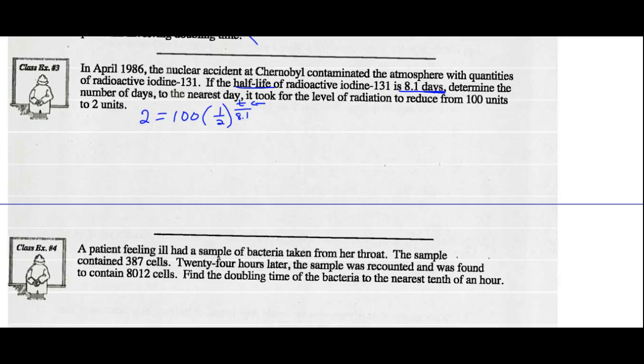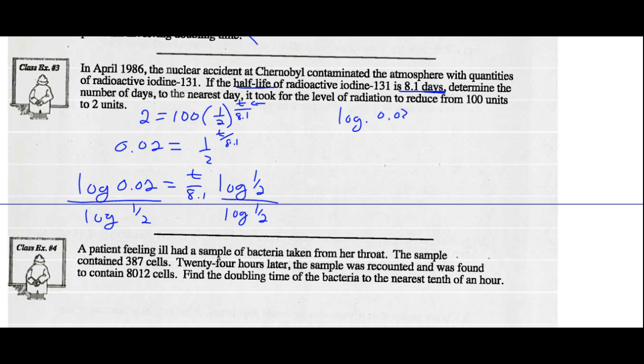If the time is 8.1 days, 8.1 divided by 8.1 gives me an exponent of 1, so one-half to the first. In 8.1 days, we would have 50 units left, half the amount. If we do it for 16.2 days, we'd have one-half squared, or a quarter of the amount, so 25 units. Now we have to figure out what t is. We can use our common log method. Step 1, divide both sides by 100. 2 divided by 100 is 0.02, and that is one-half to the exponent t over 8.1. Now we use our common logs. I take the common log of both sides. We can bring our exponent out in front and divide both sides by the log of one-half.